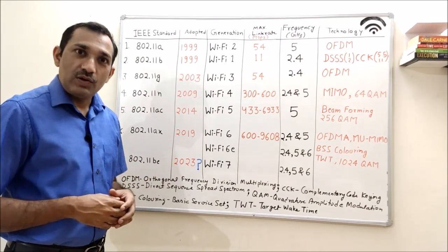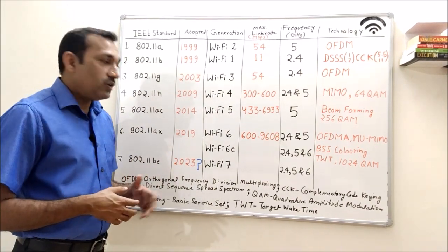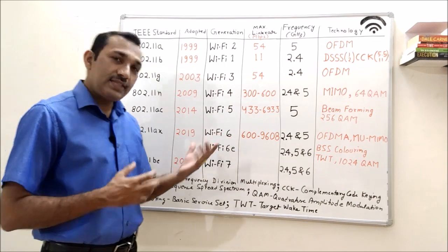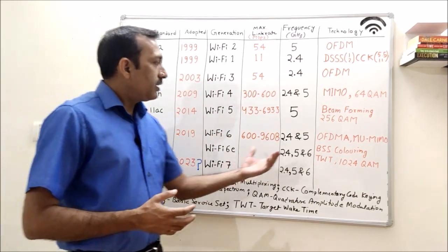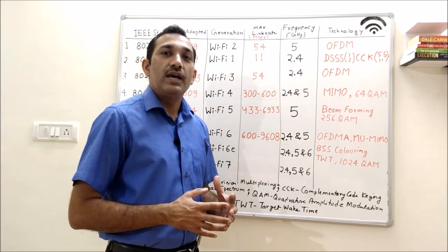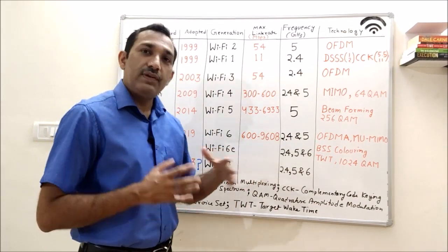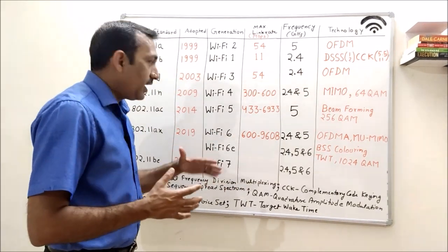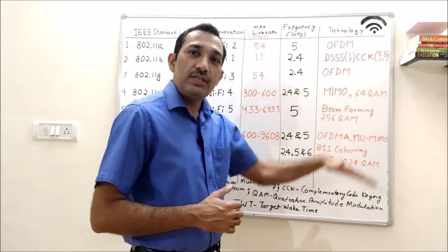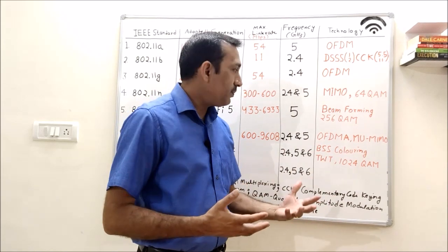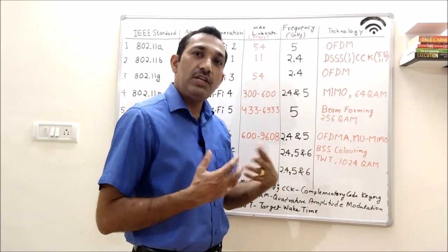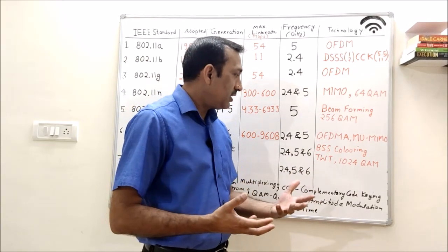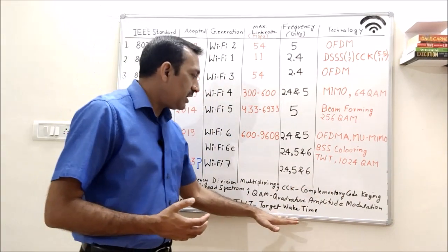And then we come to the latest technology which was adopted last year in 2019 - 802.11AX or Wi-Fi 6. Here onwards, all generations are supporting 2.4 as well as 5 GHz band. Here major changes have happened in terms of technologies added. We had OFDMA which is orthogonal frequency division multiple access, multi-user MIMO, BSS coloring, and TWT. TWT is target wake time.